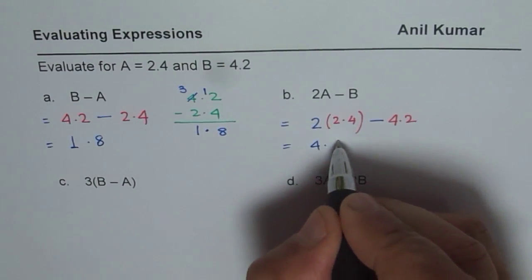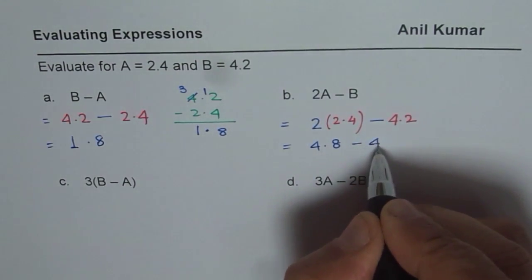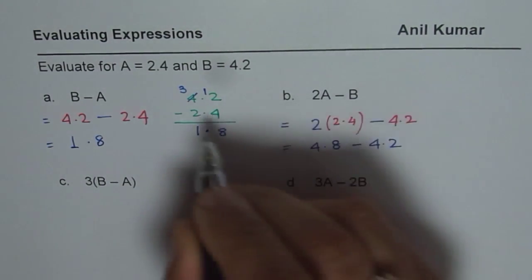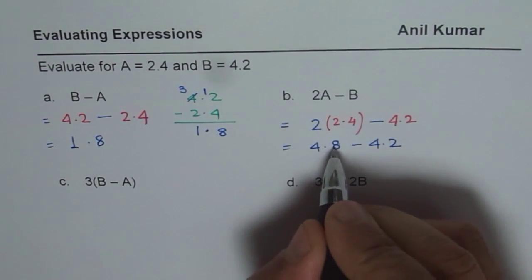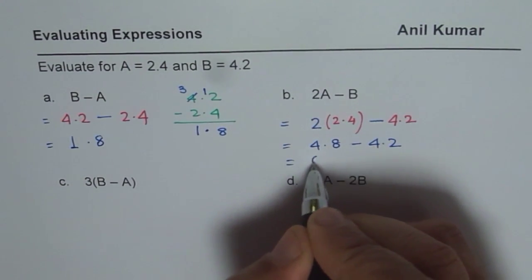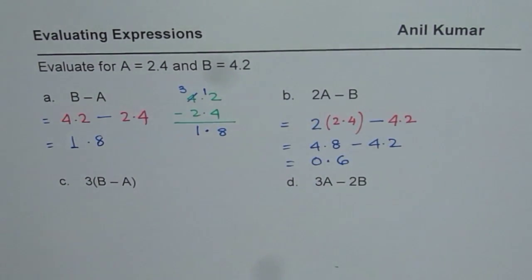Now let us perform the multiplication. We get 4.8 minus 4.2. Now 4.8 minus 4.2 is, you can do it on the side. It is 8 take away 2 in the decimal position, so the 10th place. 0.6 is your answer.